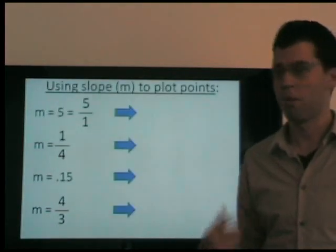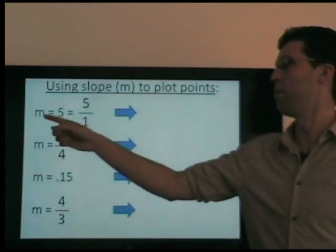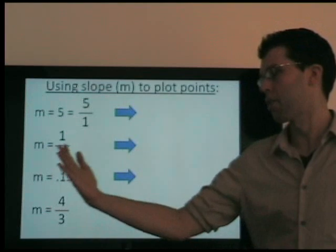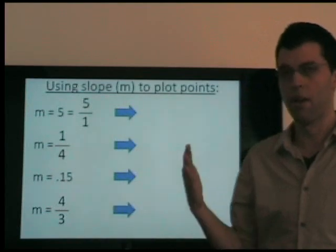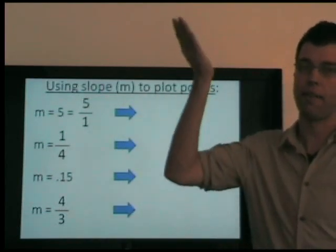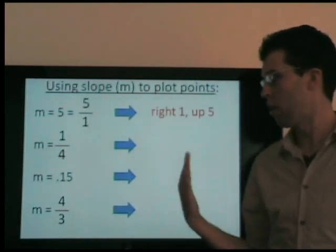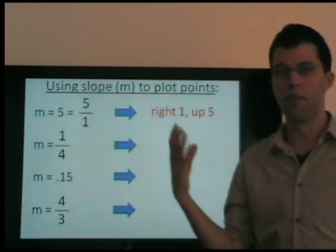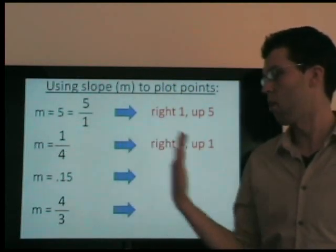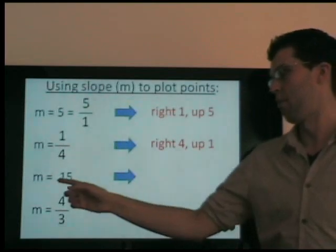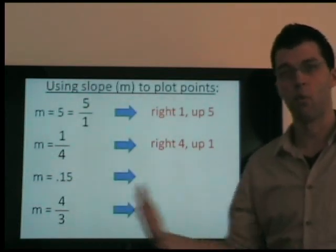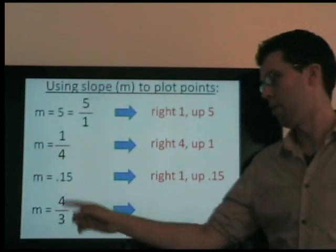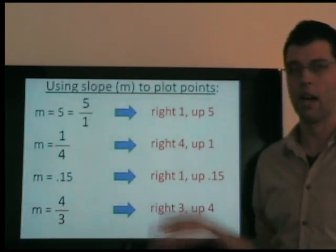Let's review slope. If the slope is 5 over 1, or 5, it means as x increases by 1, y increases by 5 — graphically, we go right 1 and up 5. A slope of 1 fourth means as we go right 4, we go up 1. For 0.15, as we go right 1, we go up 0.15. For 4 thirds, we go right 3 and up 4.